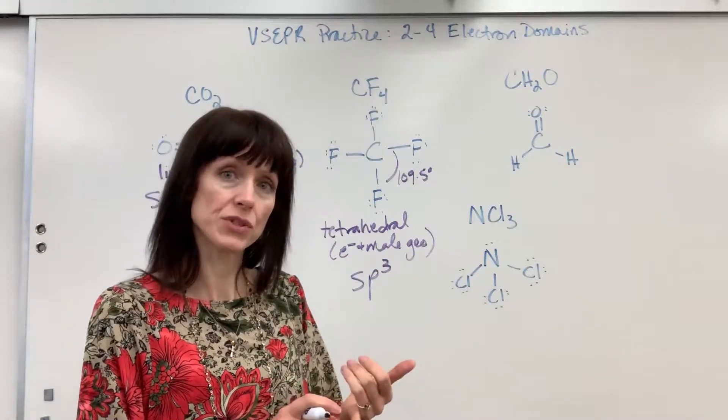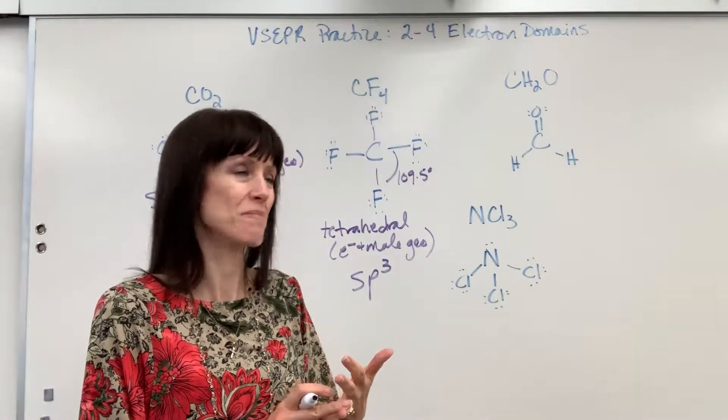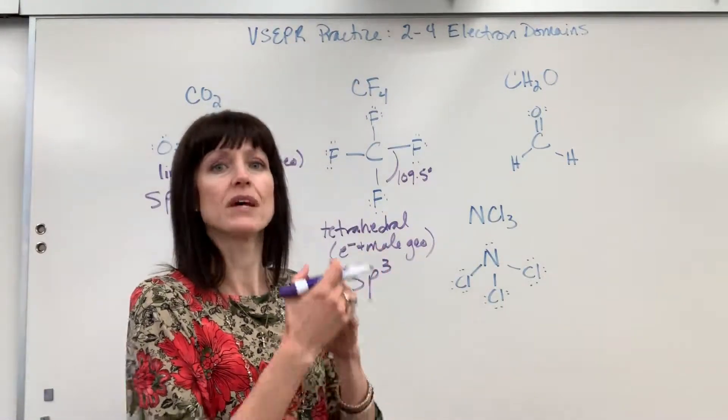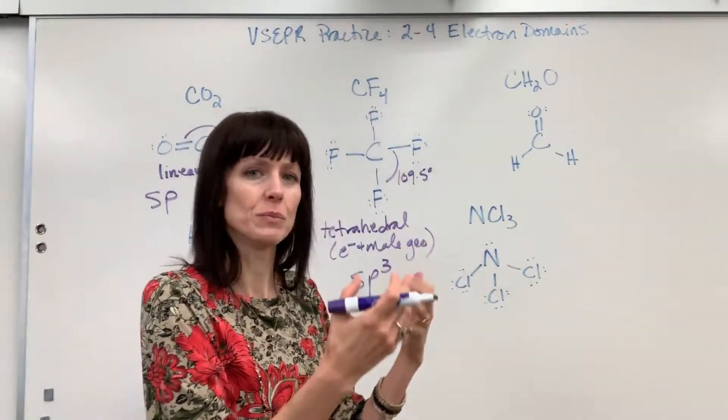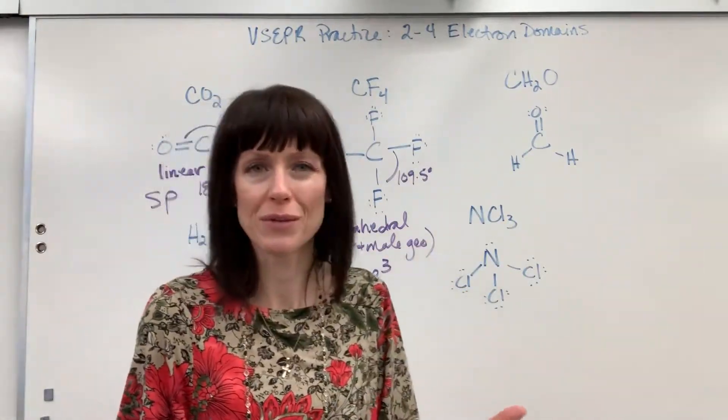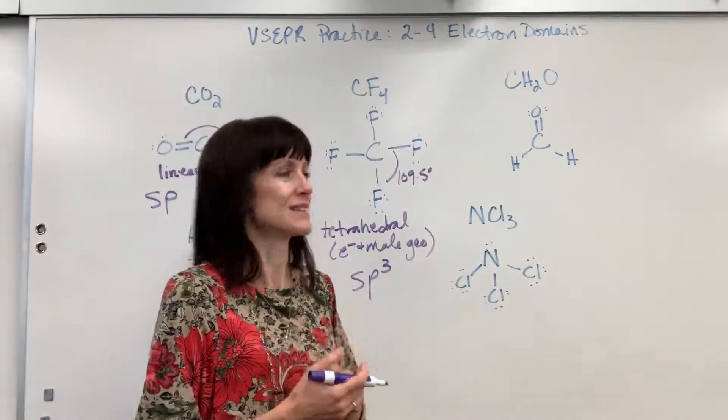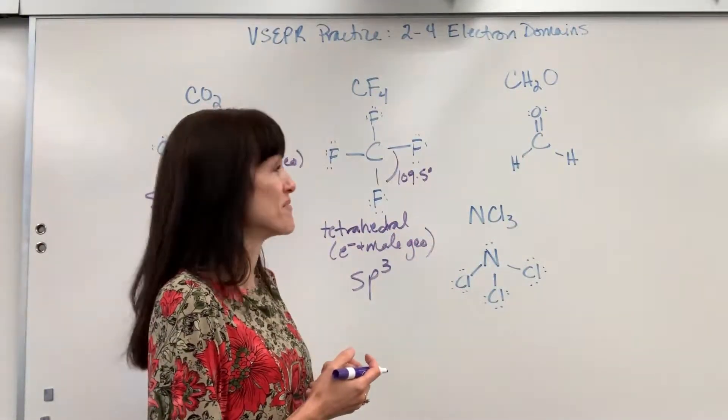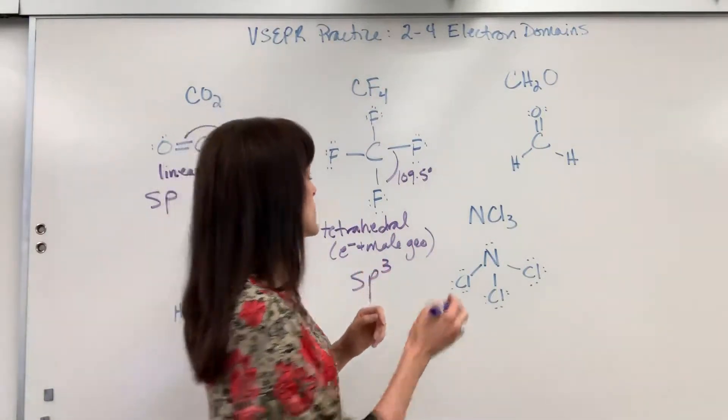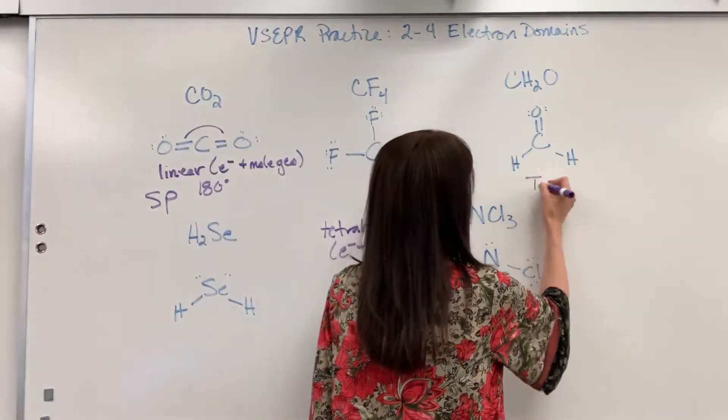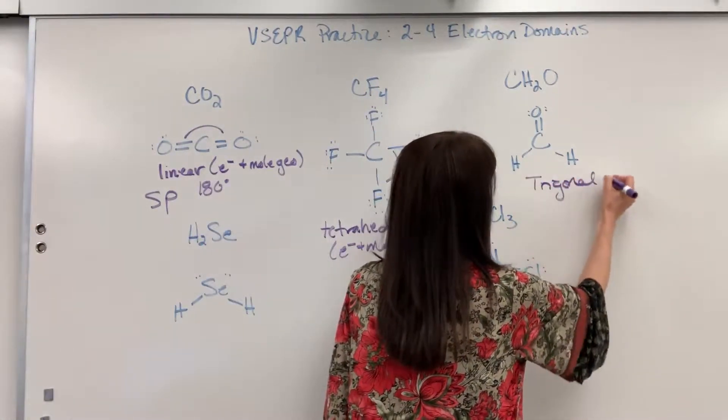Three electron domains all bonded, no lone pairs. So again, electron geometry and molecular geometry will be the same. The shapes as derived and what you would see would be the same. And of course, it's all theoretical what we would see. We get evidence for what these look like. Can't actually see them.